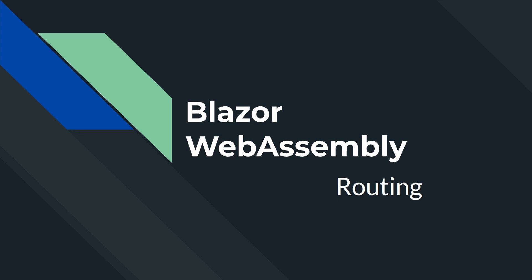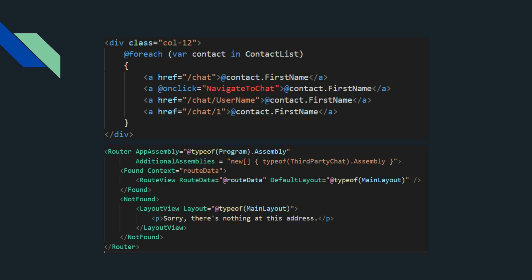In this episode I'm going to talk about routing in Blazor and its applications. First I'll cover the basics of navigating from one page to another using C# functions, then the traditional way using href, and how to pass parameters like strings or integers using hyperlinks. Then I'll dive deeper into routing and add a third-party assembly into the router in App.razor so it can use third-party pages.